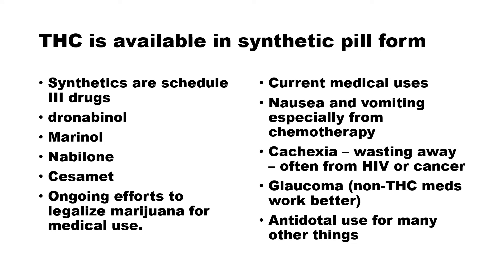One thing that went unnoticed during the debate about legalizing marijuana is that THC has been available in synthetic pill form for a very long time — synthetics are Schedule III drugs and can be prescribed by a doctor. They were used largely for chemotherapy patients. There have been ongoing efforts to legalize marijuana for medical use and, more recently, for recreational use, and the status varies from state to state. Current medical uses include nausea and vomiting especially from chemotherapy, the wasting associated with HIV or cancer, and glaucoma — though non-THC medications actually seem to work better for glaucoma. There is also plenty of anecdotal use reported for many other medical conditions.